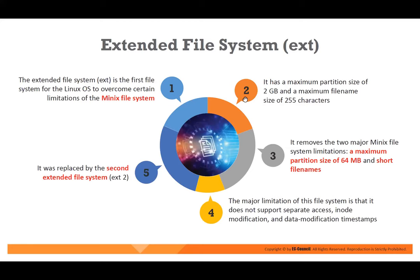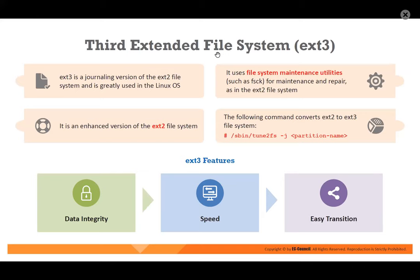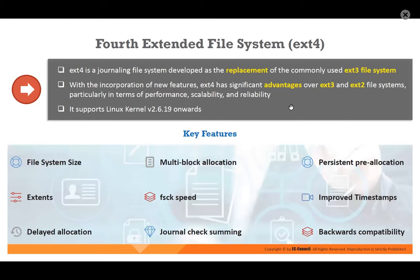The extended file system in Linux was the first for Linux devices, created to overcome limitations of the Minix file system. It has a maximum of 2GB and removed the 64MB maximum partition size limitation of Minix. They then replaced it with EXT2, then EXT3 — which added journaling file system support for data integrity — and EXT4 is the most advanced, replacing EXT3. EXT3, ZFS, and EXT2 are examples of journaling file systems in Linux.